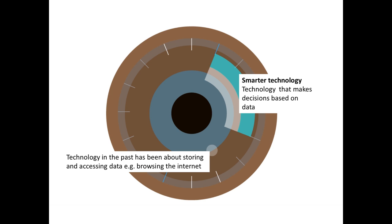Social networking in our personal lives has started to change this. Now a lot of our dominant activity online is about social communication. But the first generation of the net — which we still have a legacy of in our organisations — is really around information. What's really exciting now is technology that can make things smarter, using stored data in new ways to start making decisions and to help guide decisions.